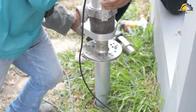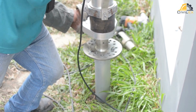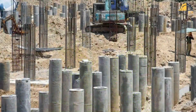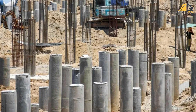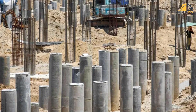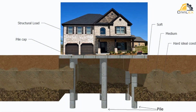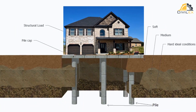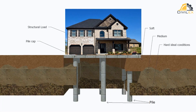A piled foundation is a deep foundation that is used when the soil is weak and cannot support the weight of the building. It consists of vertical columns, called piles, that are driven or drilled deep into the soil until they reach a firm layer of rock or soil. The weight of the building is then transferred from the foundation to the piles, which can be made of materials such as steel, concrete, or timber.